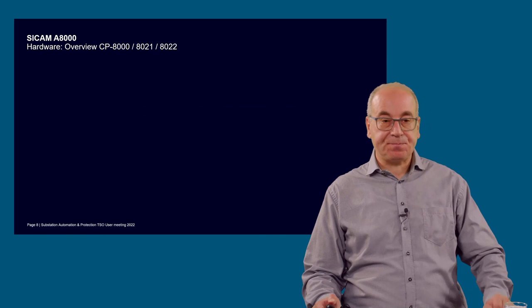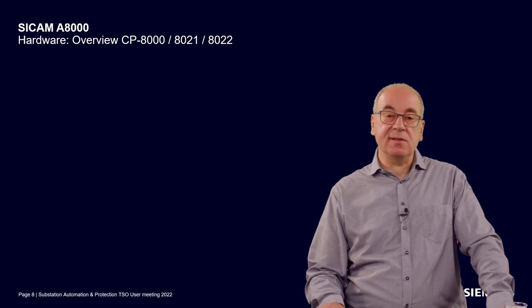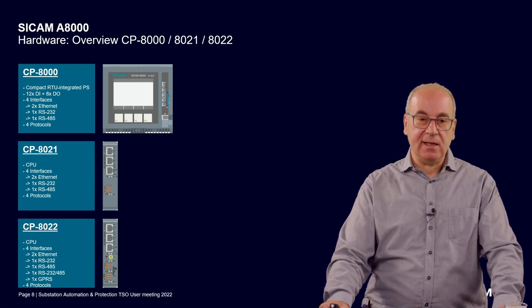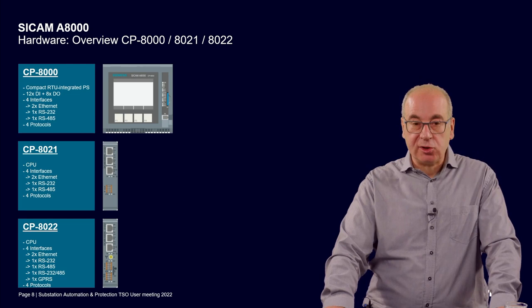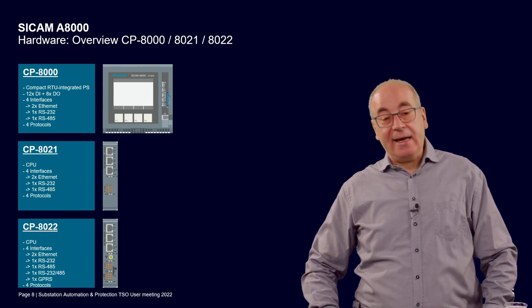From the concept, we have our smaller RTUs from the SICAM A8000 family: the CP8000, formerly called CEMIC, so the CP8021 and CP8022. They are modularly designed, all working with the same firmware and same protocol drivers, and all have four communication interfaces — two Ethernet-based and two serial-based. The CP8022 additionally has wireless communication with GPRS and one additional serial protocol. The CP8000 is a compact housing with two input-output modules and power supply already on board.